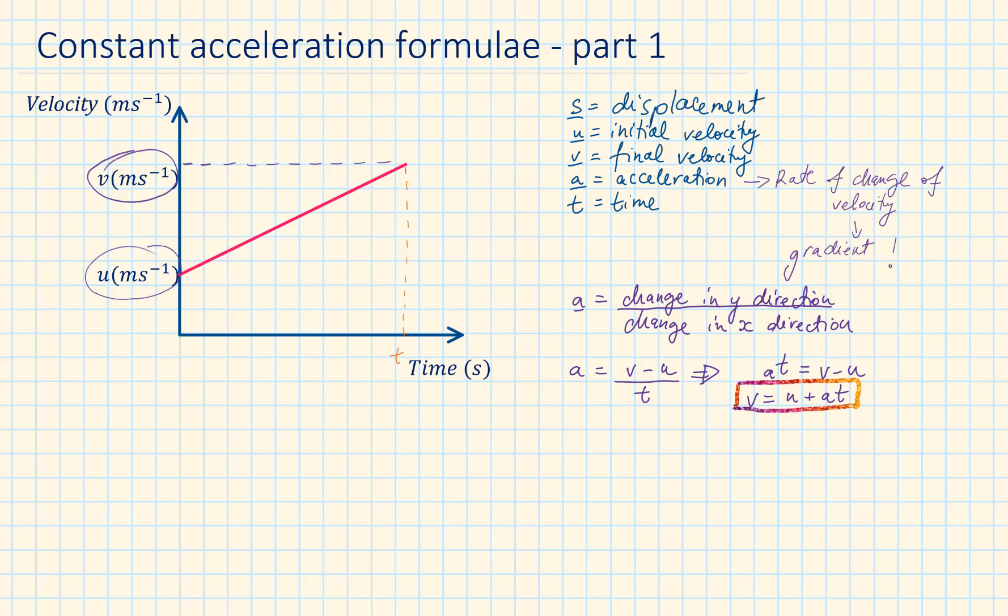When we divide the unit of the y direction and the x direction, m per second divided by second, that results in m per second squared. This matches with the unit of the acceleration. Now if we look at the area unit, if we times the two units, we will have m per second times second, which is equal to meters.